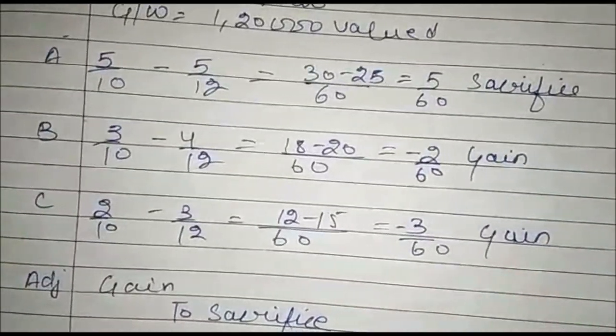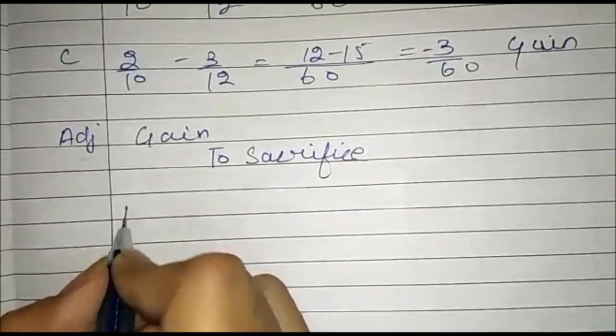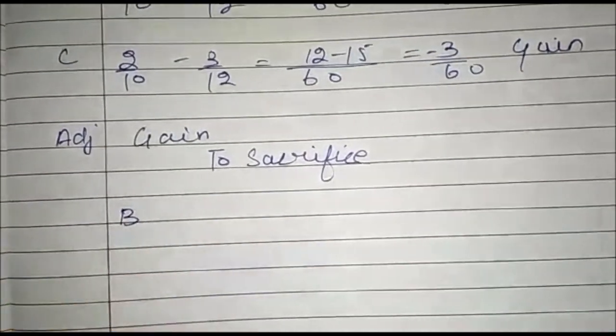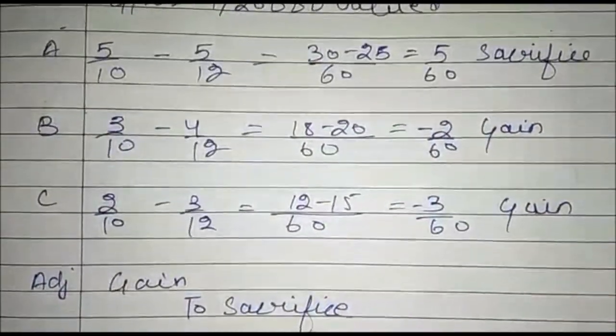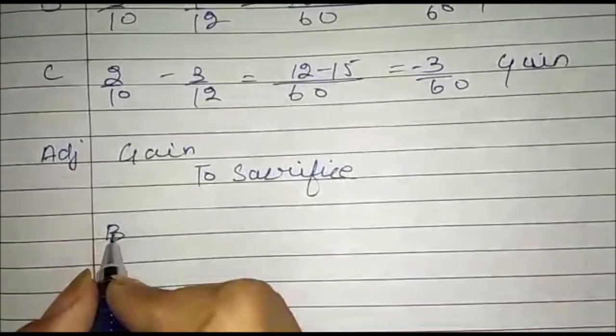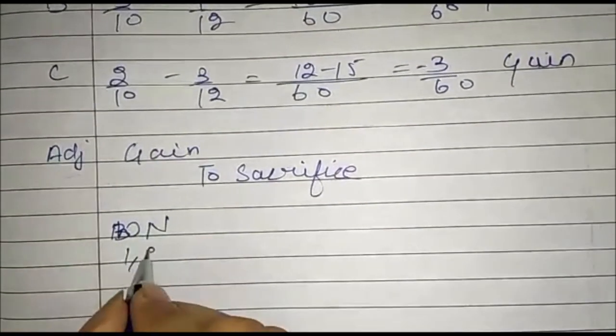The entry we are going to make is: B's account debit, C's account debit, to A's account credit. The goodwill value given will be distributed in this ratio, which we calculate in working notes.